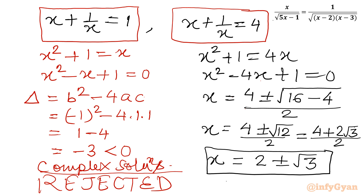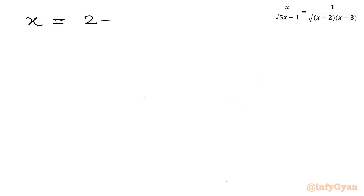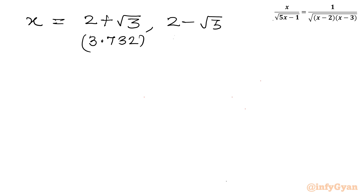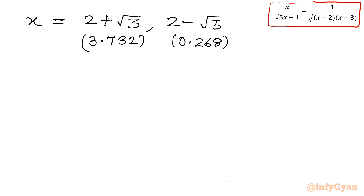If you will see, both values are positive, since root 3 is approximately 1.732. So the two solutions are 2 plus root 3, which is approximately 3.732, and 2 minus root 3, which is approximately 0.268. Now we will verify whether we should accept both solutions. Point number 1: x should always be positive. Both values are positive, so that is true.